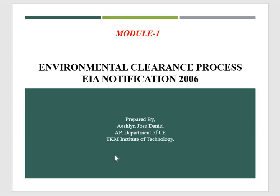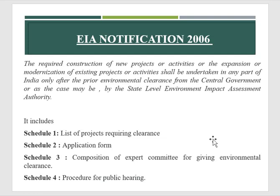We will be dealing with two topics: EIA Notification 2006 and the Environmental Clearance Process. Before starting any new project, we have to go through environmental impact assessment. Any required construction of a new project, or the expansion or modernization of any existing project or activities, should prior go through environmental clearance from the central government or from the state level environmental impact assessment authority.